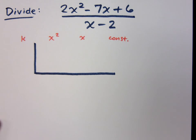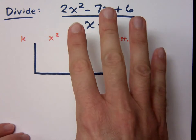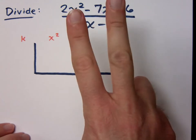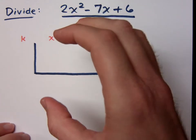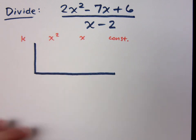If you have to start with your highest degree, if your highest degree was 4, you'd have x to the 4th, x to the 3rd, x squared, x, and then your constant. If one of those guys is missing, you put a 0 in its place.